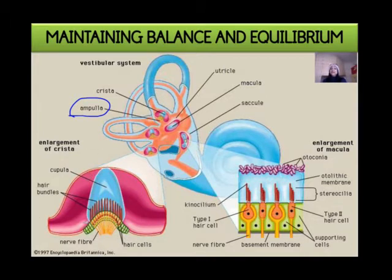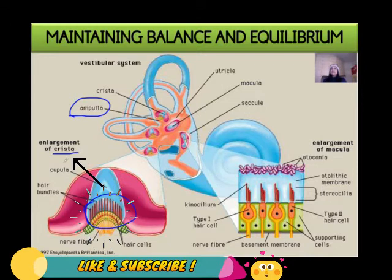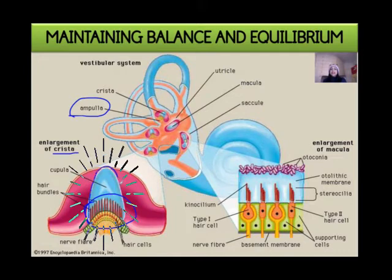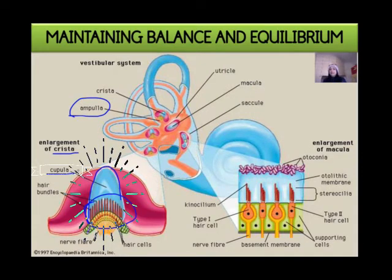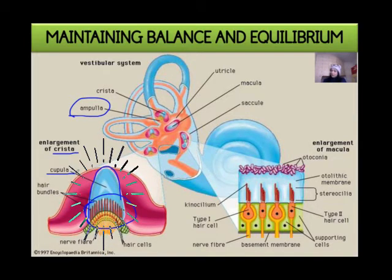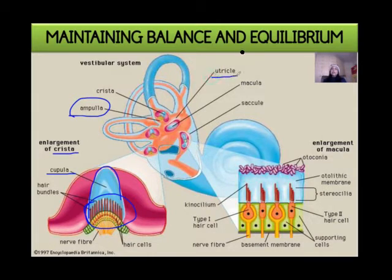Within the ampulla we find receptor cells — hair cells — which we call the cristi. Surrounding the cristi is a jelly-like or gel-like substance called the cupula. So within an ampulla we find receptor cells and a gel-like substance called the cupula.